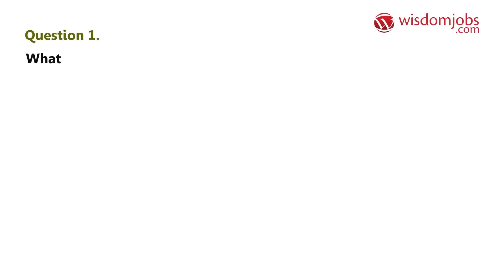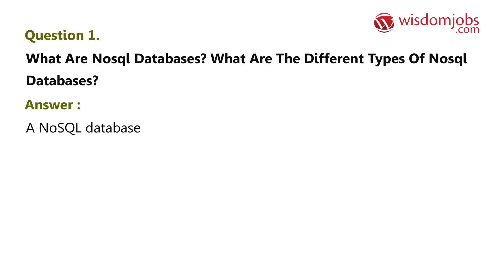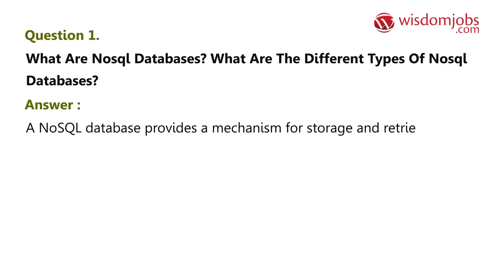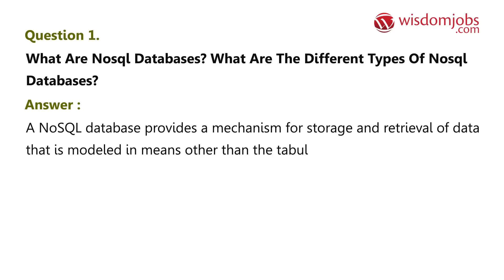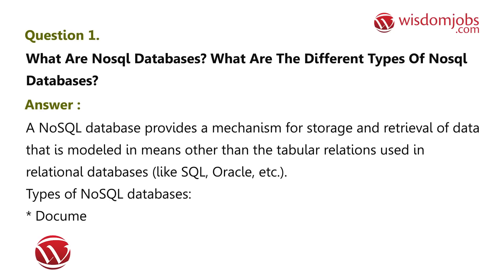Question 1: What are NoSQL databases? What are the different types of NoSQL databases? Answer: A NoSQL database provides a mechanism for storage and retrieval of data that is modeled in means other than the tabular relations used in relational databases like SQL, Oracle, etc. Types of NoSQL databases are: document-oriented, key-value, graph, and column-oriented.